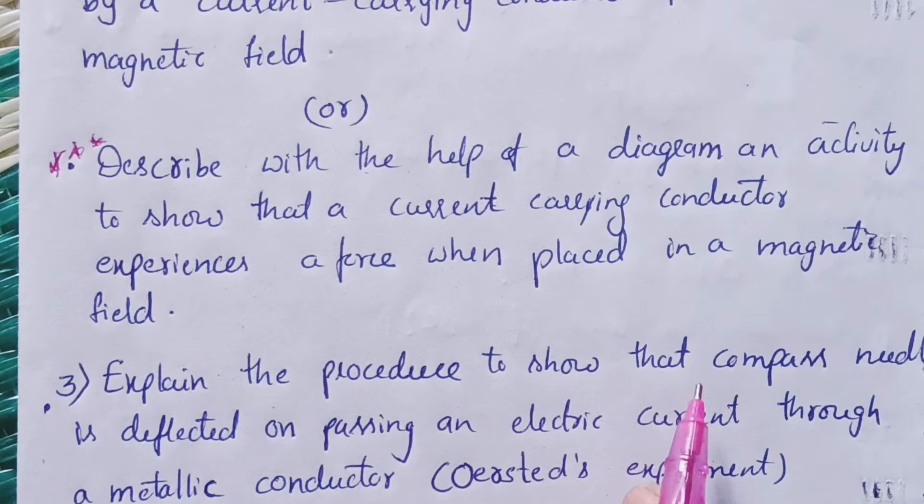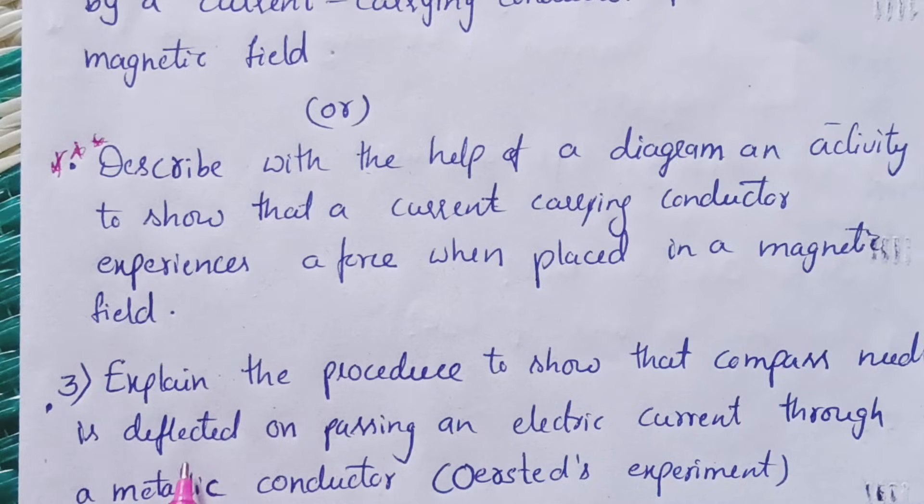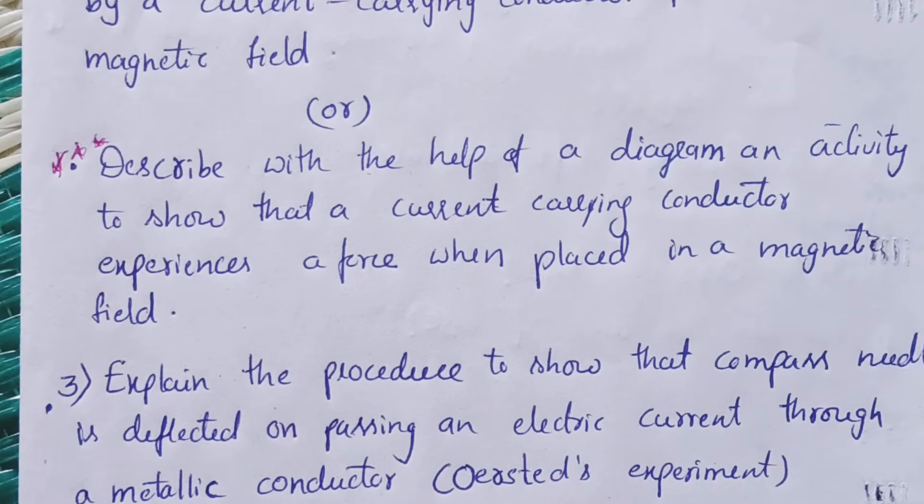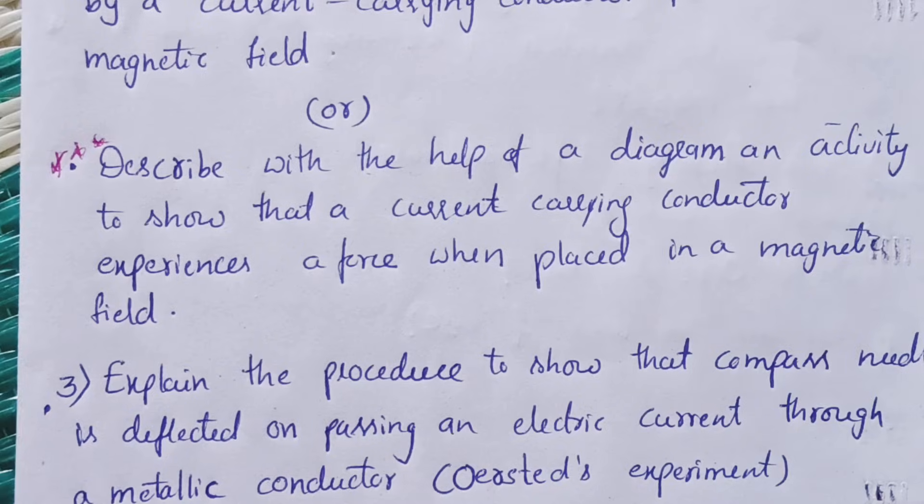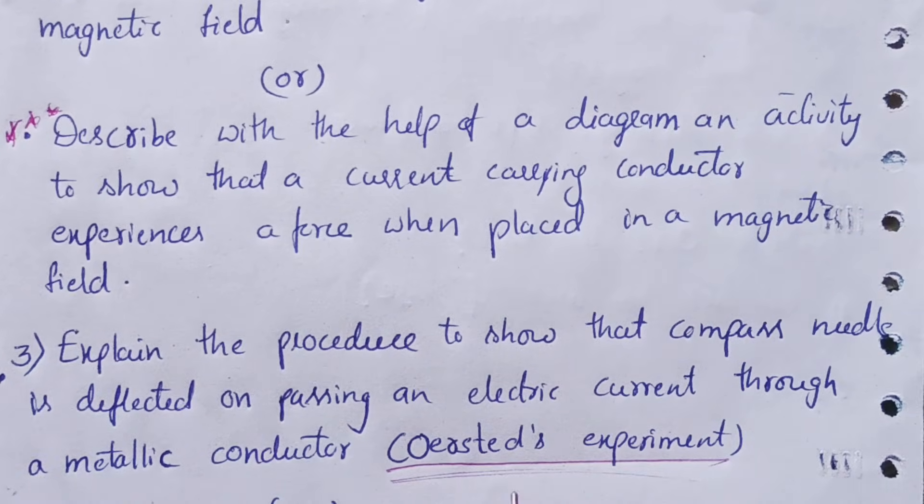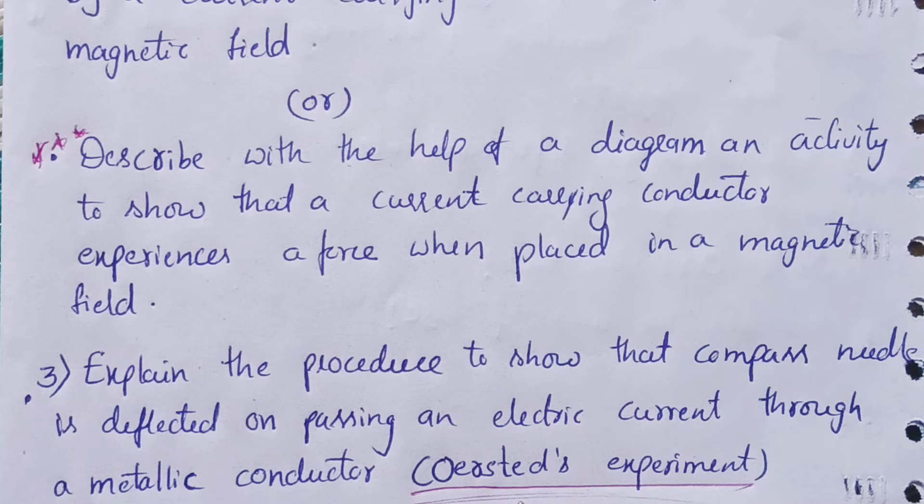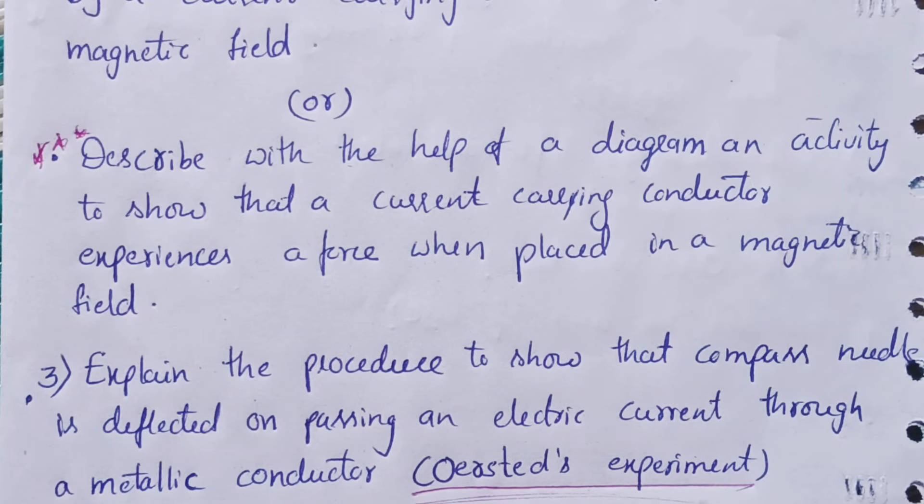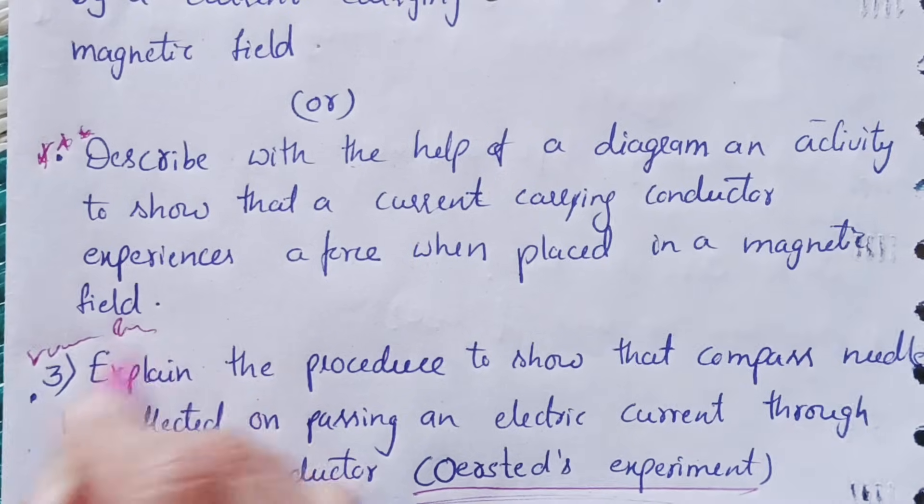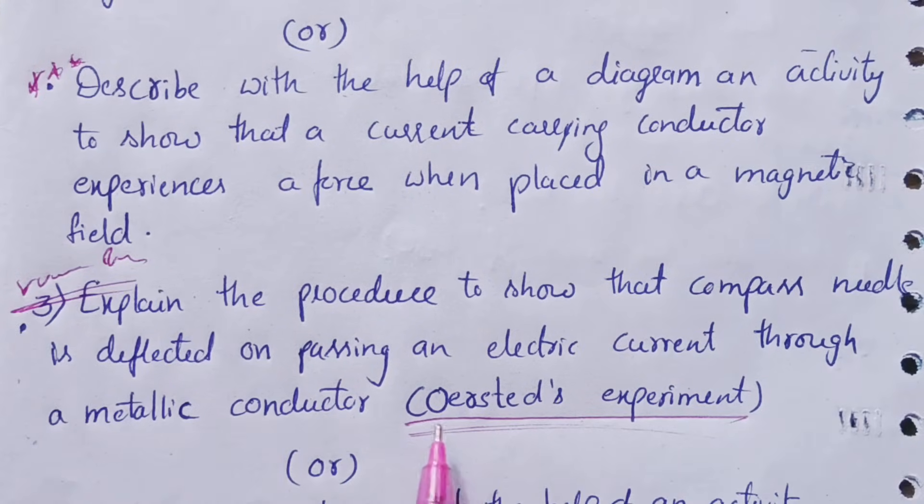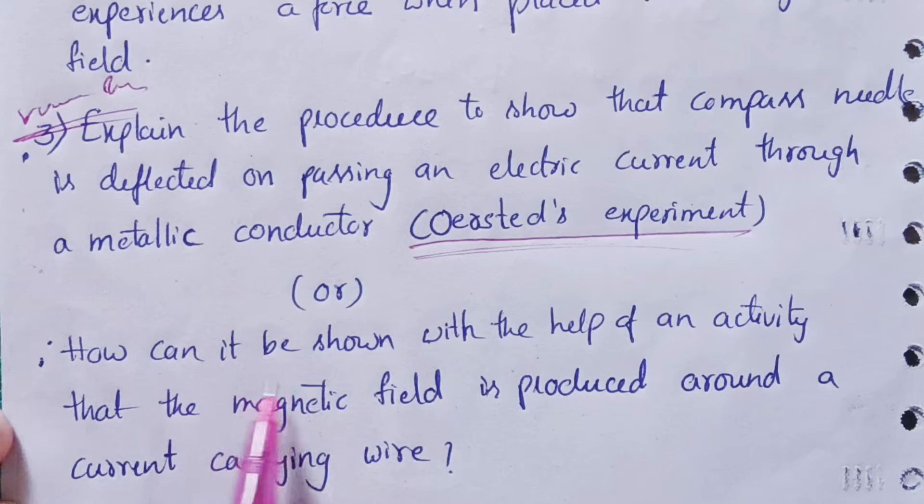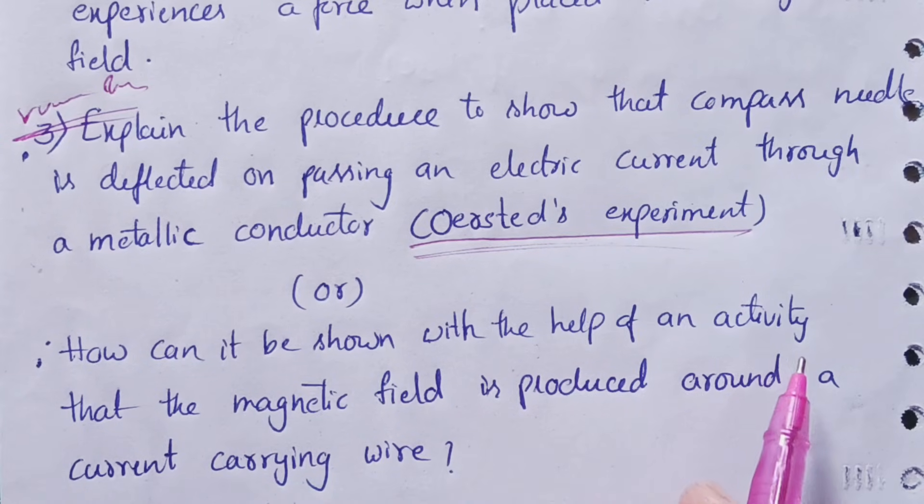Our third question from this chapter is: explain the procedure to show that a compass needle is deflected on passing an electric current through a metallic conductor. This is very important, or Oersted's experiment. This Oersted's experiment is very, very important.